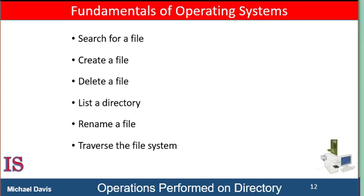Of course we're going to want to be able to list the directory — we need to list the files in the directory and the contents of the directory entry for each file in the list, such as access codes, locations, and things like that. We also rename a file. Because the name of the file represents its contents to its users, we must be able to change the name when the contents or the use of the file changes. Renaming a file may also allow its position within the directory structure to be changed. And of course we want to traverse the file system, so we may wish to access every directory and every file within the directory structure.